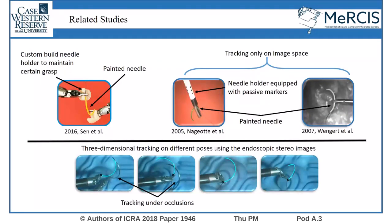Earlier studies in the literature rely on simplifying assumptions such as artificially colored needles, unchanged lighting conditions, or external camera systems, which are not applicable to practical robotic minimally invasive surgery scenarios. In contrast, the present study aims to perform needle tracking using images from the endoscopic stereo cameras of a realistic system without any modification to the robotic tools, endoscopes, or the surgical needles.